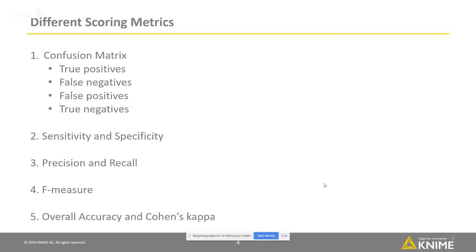The reason why we need different scoring metrics — there are a few reasons. First of all, the concrete model objective determines which scoring metric is relevant to report. For example, here I have a classification where I predict the color of a wine — is it red wine or white wine? If I make a wrong class prediction and predict red wine as white wine, it's not so serious. Nobody dies. But another example could be predicting if a person has a disease or not, and then somebody may die if I make a wrong class prediction.